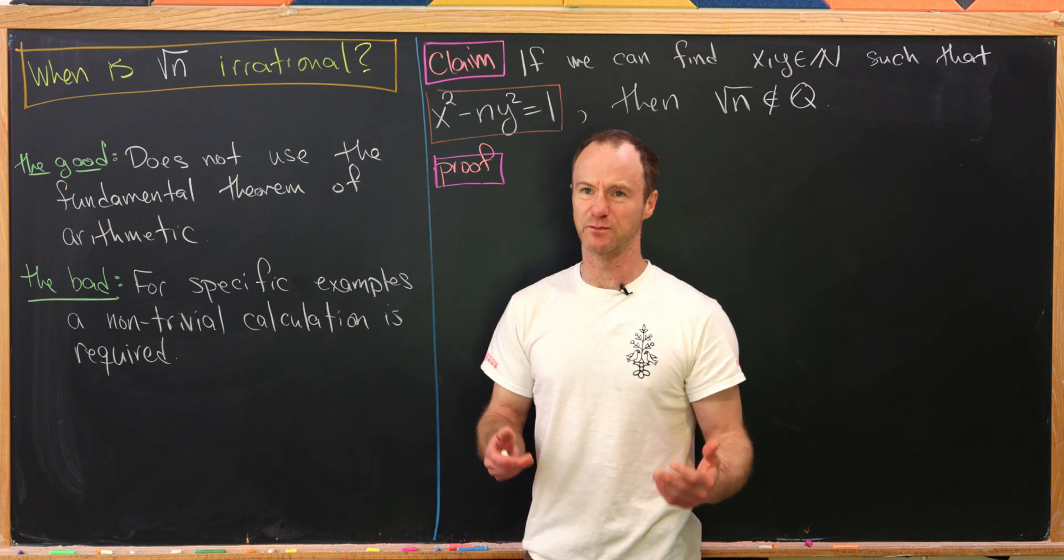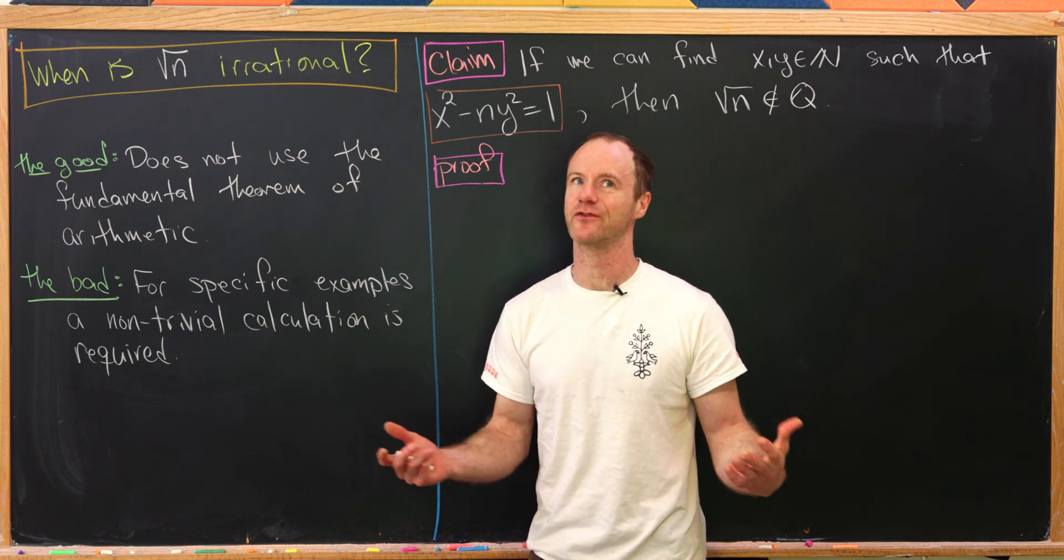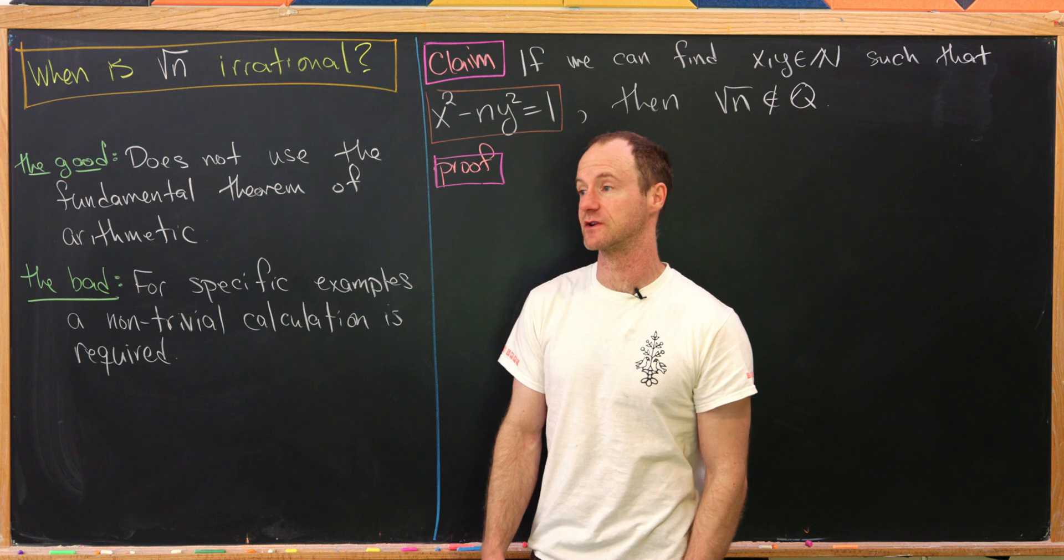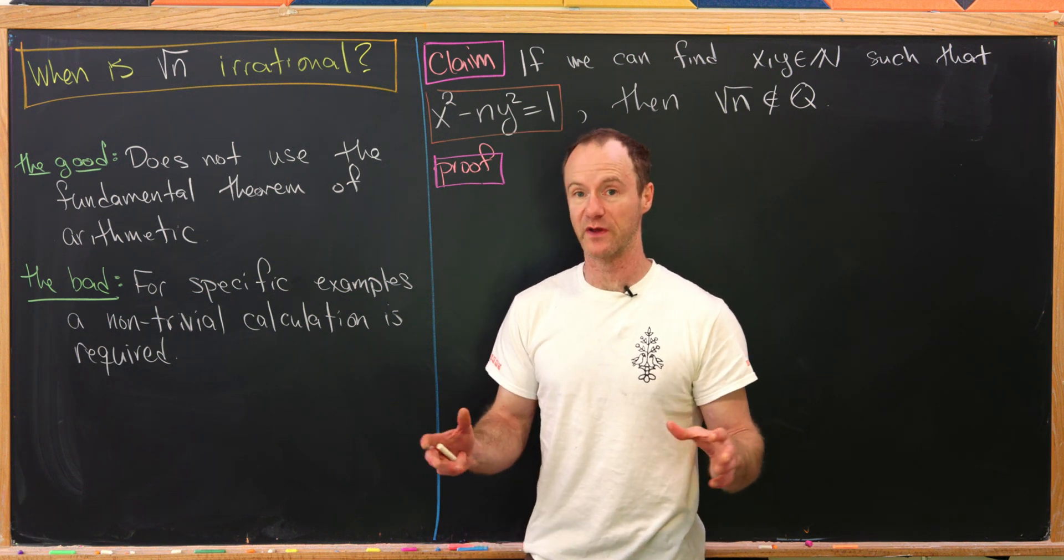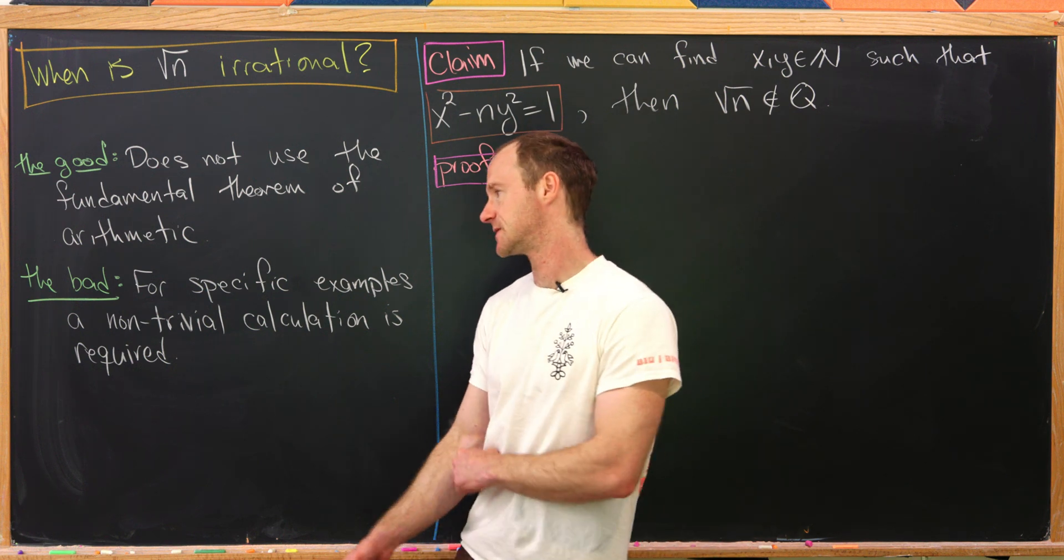Most proofs by contradiction that, for instance, the square root of 2 is irrational use really the fundamental theorem of arithmetic in the background, even if you don't mention it.